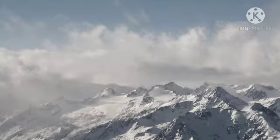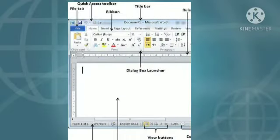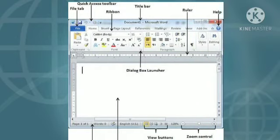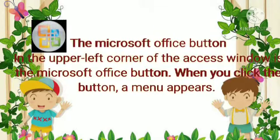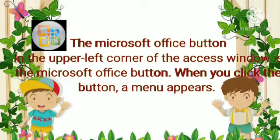The parts of a database window: you can create and manage your tables, queries, forms, and reports from this window. The title bar of this window shows the name of the database. The Microsoft Office button is located in the upper left corner of the Access window. When you click the button, a menu appears. You can use the menu to create a new file, open an existing file, save a file, and perform many other tasks.